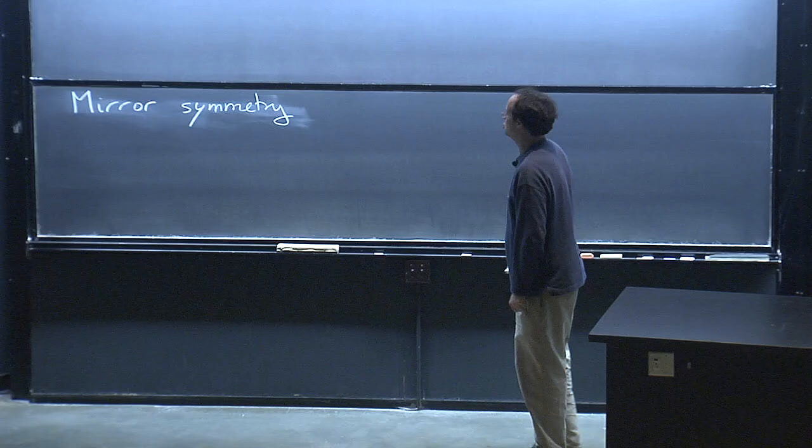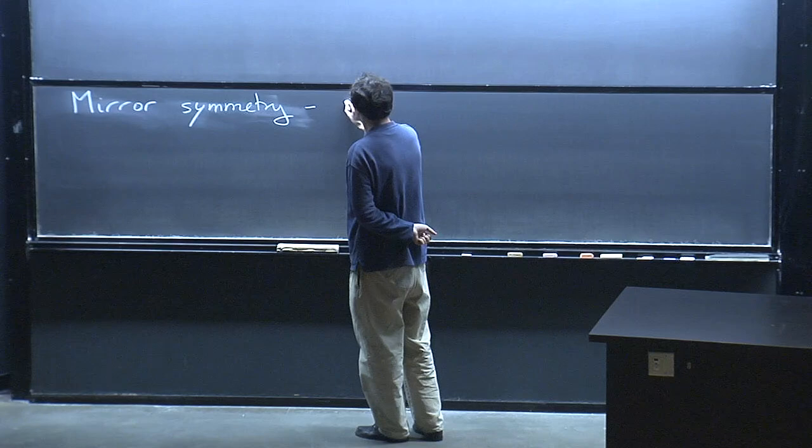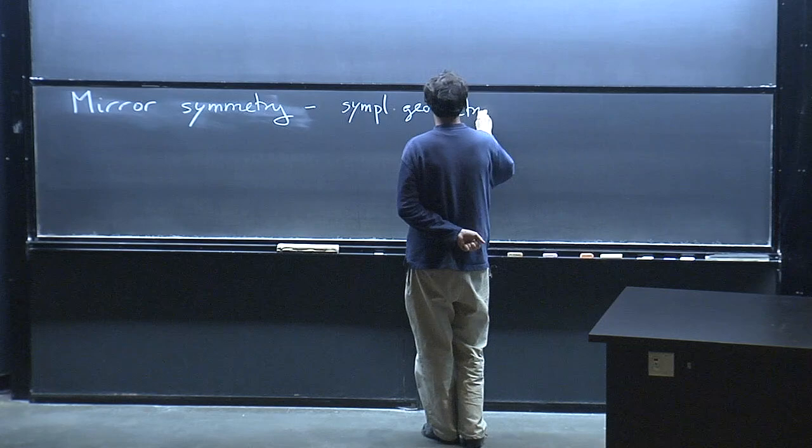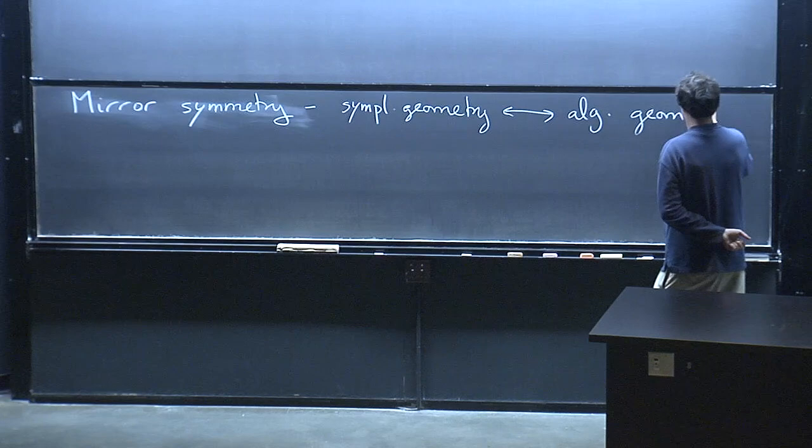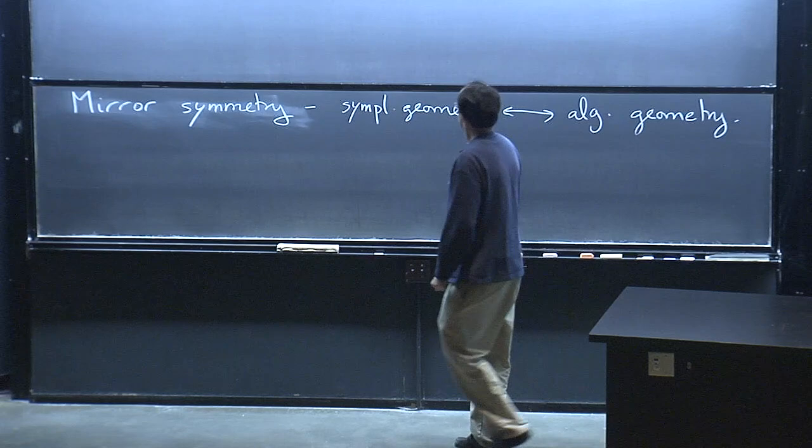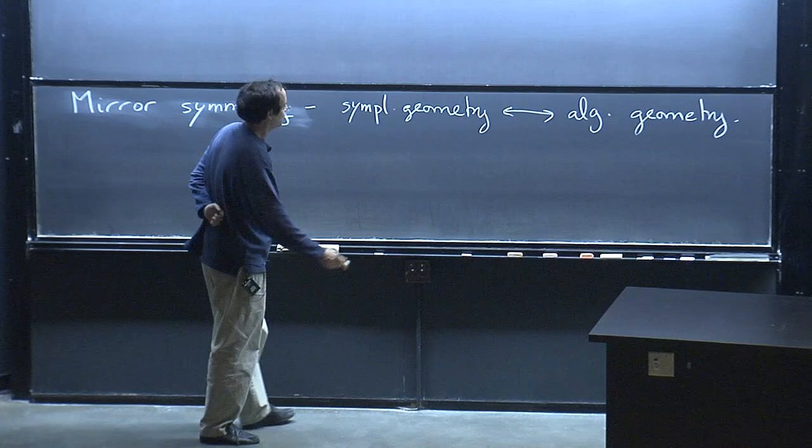The goal is actually to state a new conjecture. In general, mirror symmetry is the belief that symplectic geometry and algebraic geometry are essentially the same thing, as long as you do them on different spaces called mirror pairs of spaces. In the formulation that I'm interested in, called homological mirror symmetry, the key objects of study in symplectic geometry are Lagrangian submanifolds of a symplectic manifold.